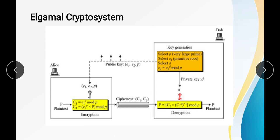After selecting d, we calculate e2, where e2 = e1 raised to d mod p. This gives us the public key, which has three components: e1, e2, and p. This public key is shared between the sender and receiver and is used by Alice (the sender) for the encryption purpose.